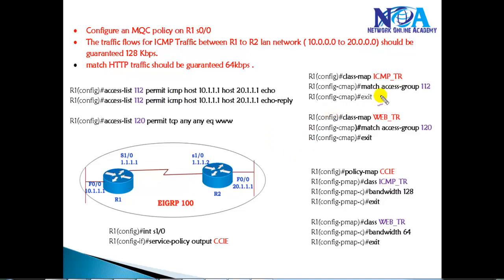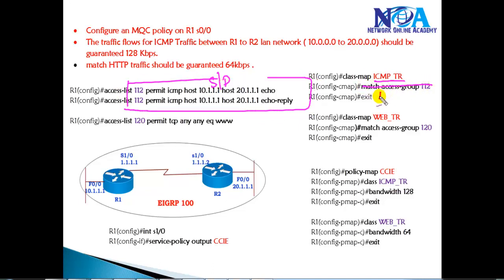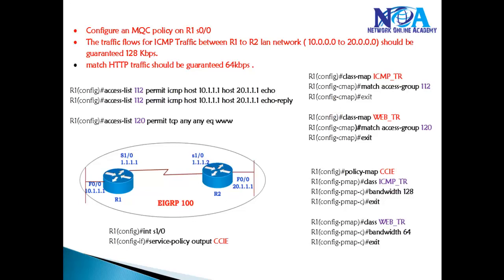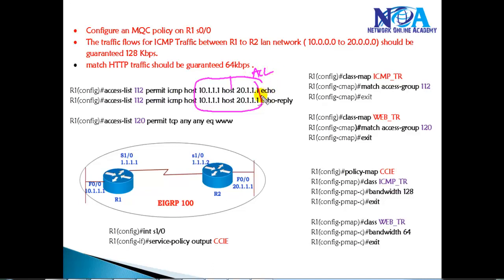To configure this, we create a class map and use 'match access-group' with an ACL that specifies source and destination. If no specific source and destination are needed, we can directly write 'match protocol icmp', which matches all ICMP traffic regardless of source or destination. Web traffic is placed in a separate class map.